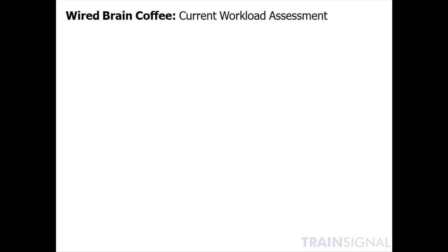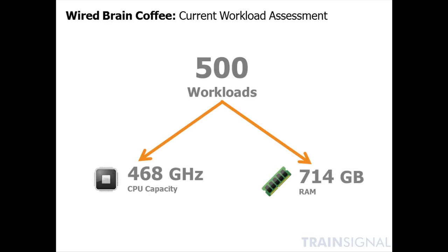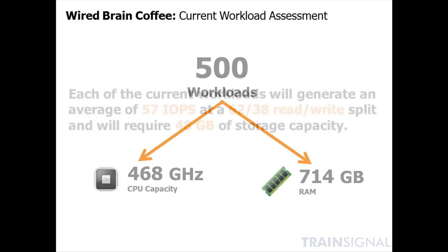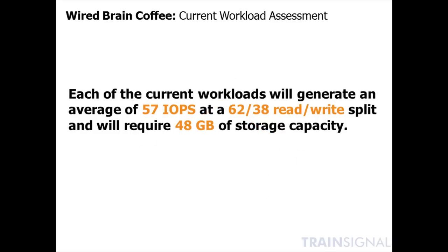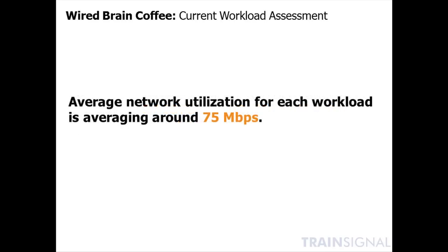Continuing in our scenario with Wired Brain Coffee, we performed an assessment of the current workloads they're going to move into their new VMware vSphere 5 implementation in the new data center. They have 500 workloads they want to run, looking for 15% growth per year for three years. Based on the assessment, the workloads require 468 gigahertz of CPU capacity and 714 gigabytes of RAM. On the storage side, they'll generate on average 57 IOPS with a 62% read, 38% write split. Total storage capacity is 48 gigs, and average network utilization per workload is around 75 megabits per second. Let's use this information to begin crafting a VMware vSphere design for Wired Brain Coffee.